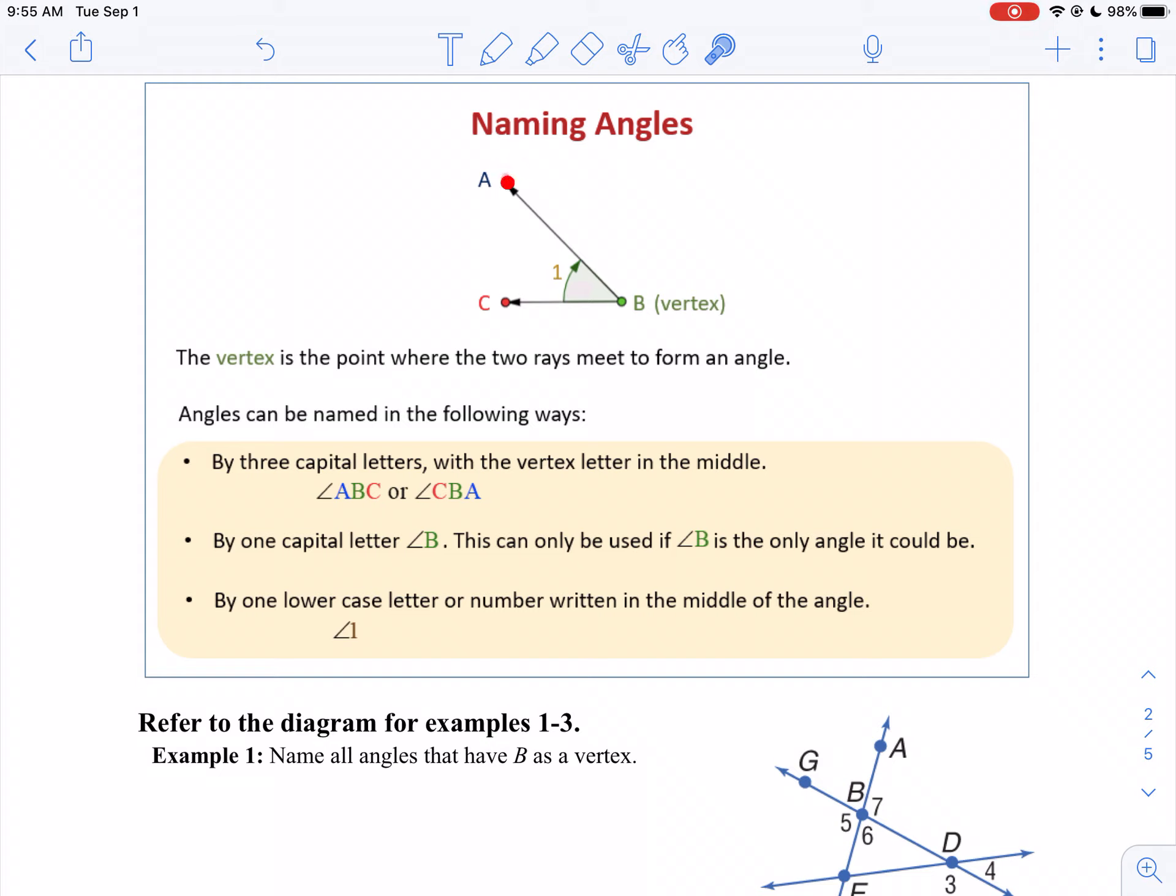So you could name this as angle ABC, angle CBA. Now that gets to be kind of a mouthful, especially when we're talking about a whole bunch of different angles. So sometimes we'll put a number in here, we'll just call that angle 1.